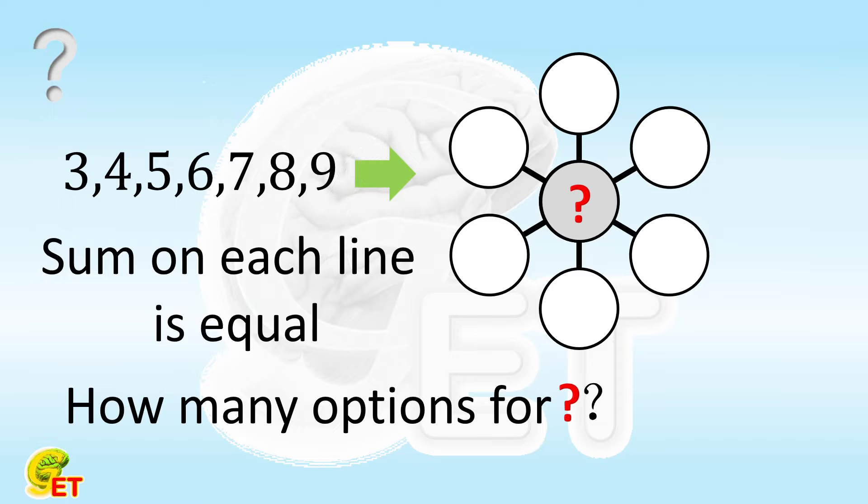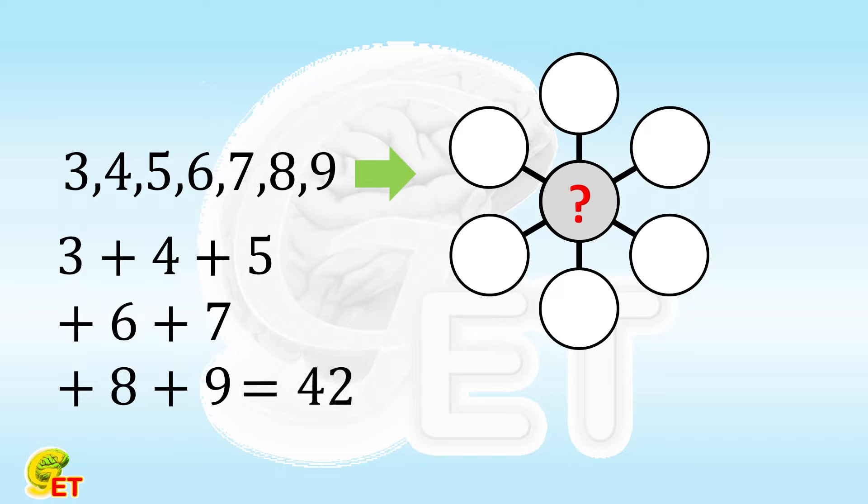3, 4, 5, 6, 7, 8, and 9 add up to 42. There are a total of 3 lines on the figure on the right. That is to say, 3 summations will be obtained in the end. If we add these 3 summations together, the result must be a multiple of 3.